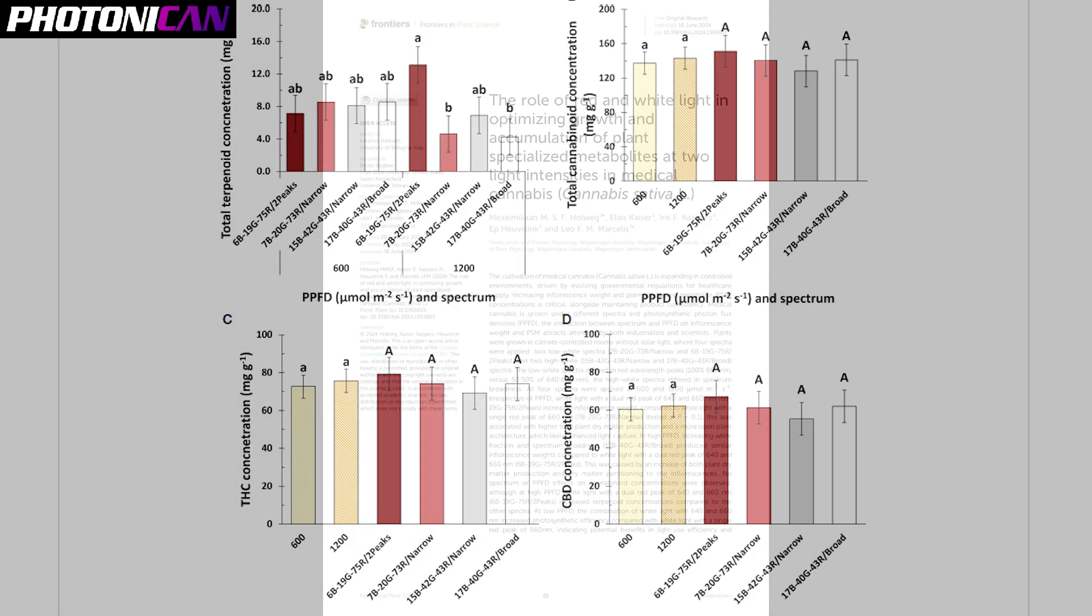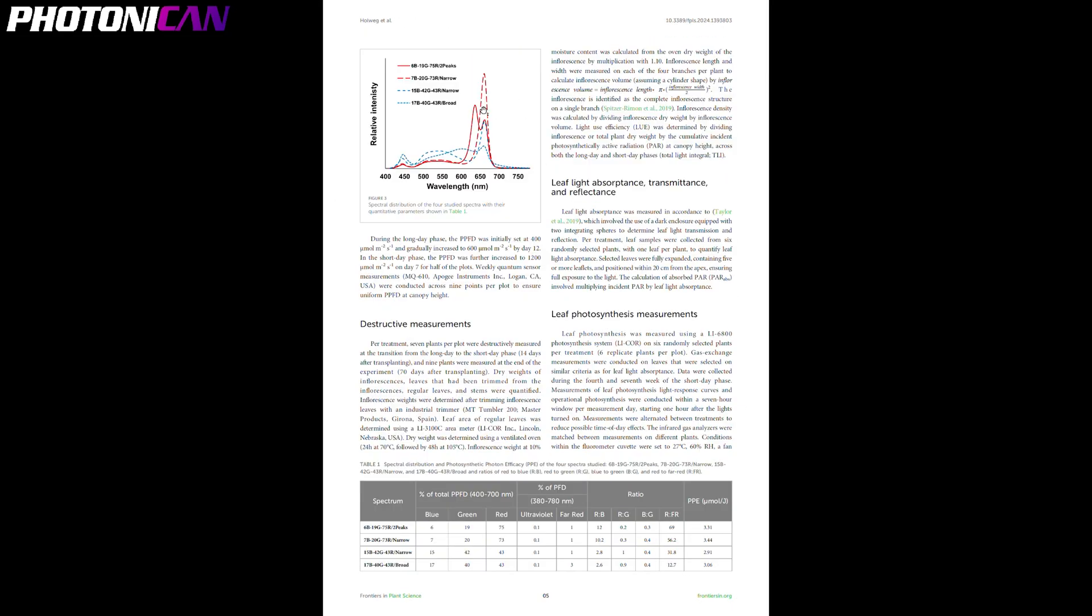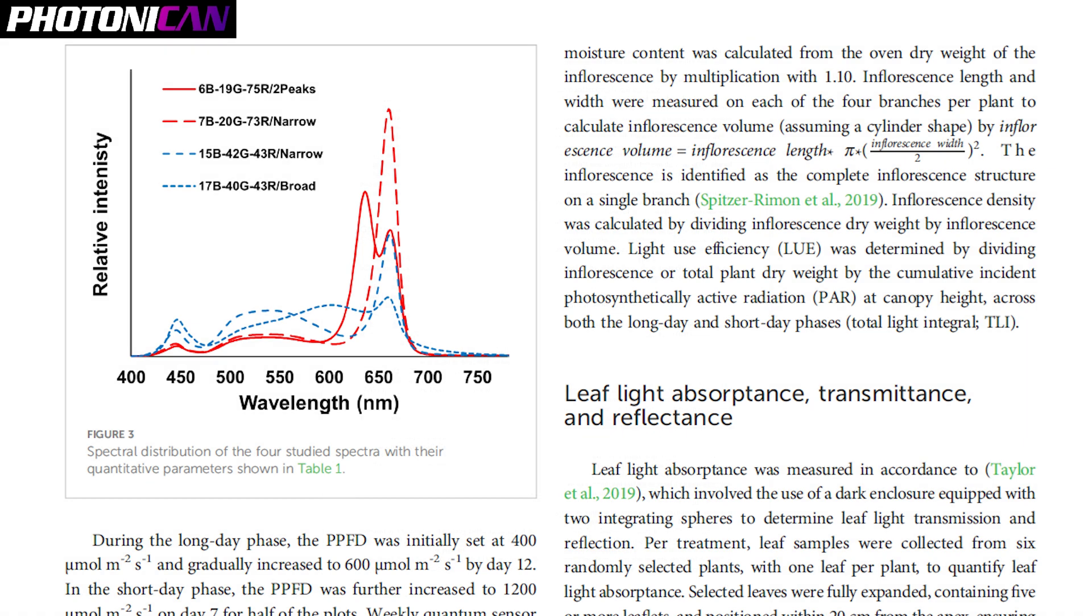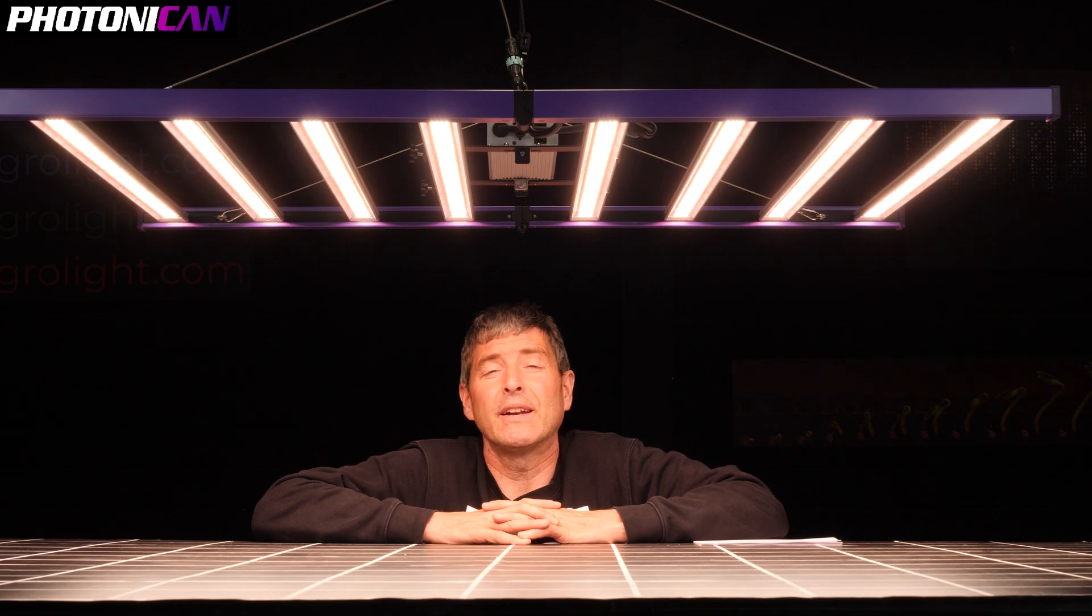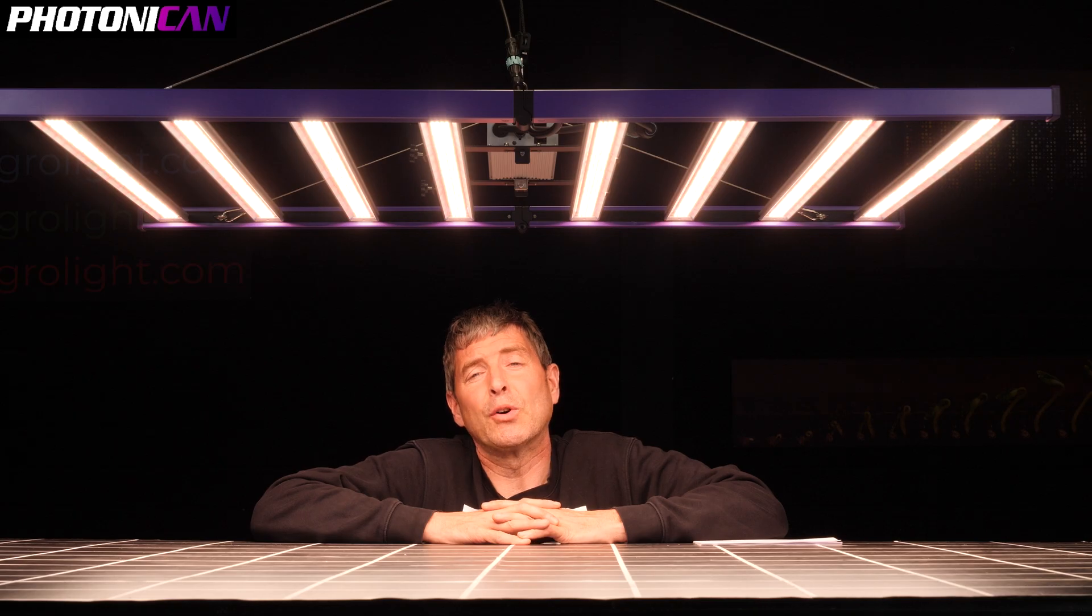The unique element to it was that it had two red peaks, one at 640 and one at 660 nanometers. They don't state what the reason for this is, although there's some theory behind it. In my view, it's likely that it's spreading the load, allowing the plant to absorb more light by spreading out those peaks and not overloading the plant in one particular area.